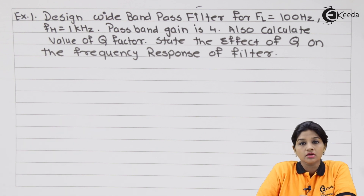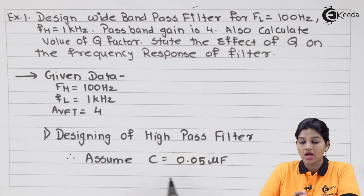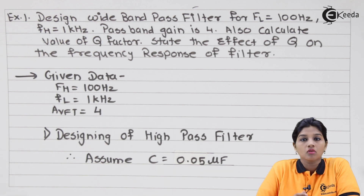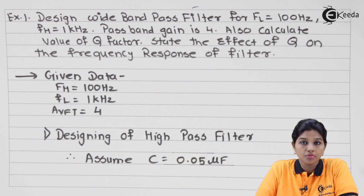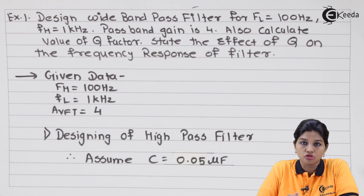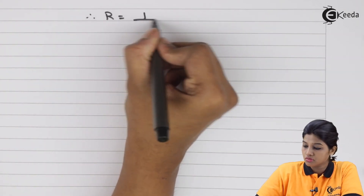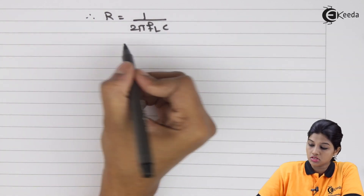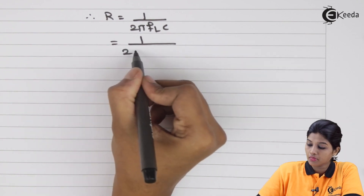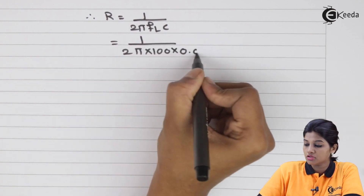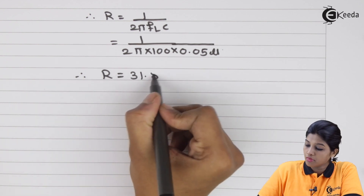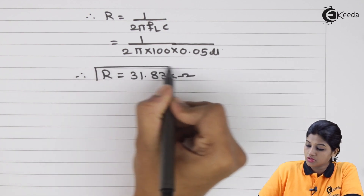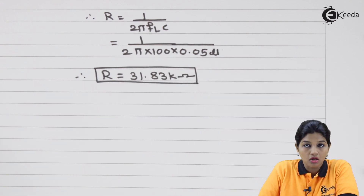Let's write down the given data and start with the designing. Assume the value of capacitor C as 0.05 microfarad. To calculate R for the high pass filter, we use R equals 1 upon (2π × fl × C), which gives R equals 1 upon (2π × 100 × 0.05 μF). So the value of R equals 31.83 kilo ohms.